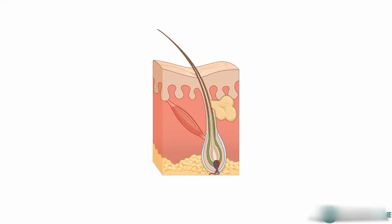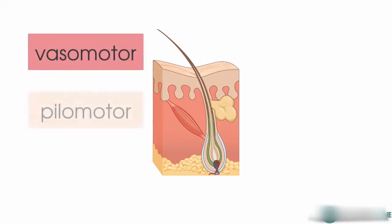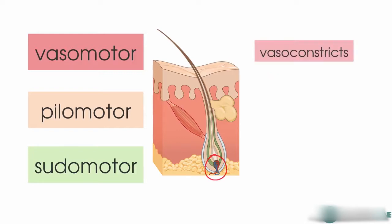This kind of sympathetic innervation provides three functions: vasomotor, pilomotor, and sudomotor function to the skin. Vasomotor means that it vasoconstricts the arterioles in the skin. Pilomotor means that it supplies the erector pili muscles, so this pilomotor function causes hairs to stand on end when they contract. Sudomotor means it supplies sweat glands.